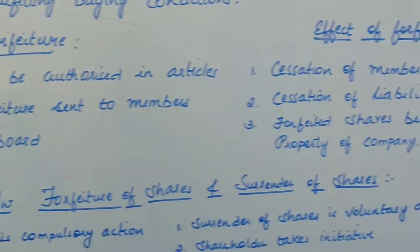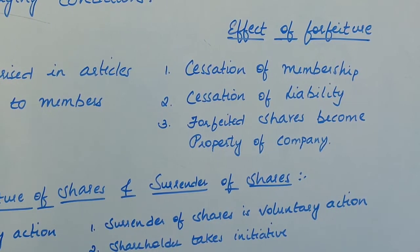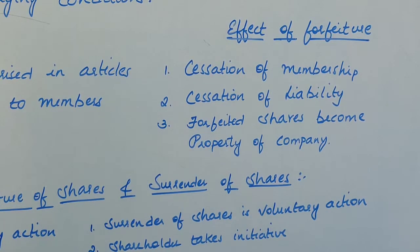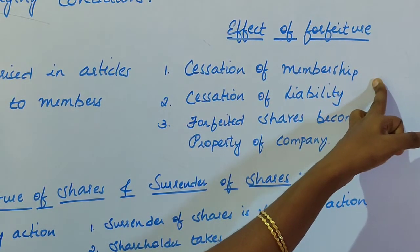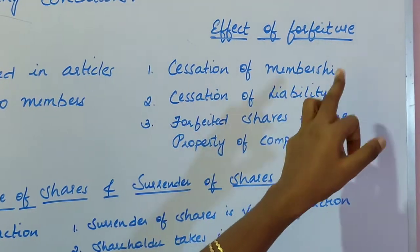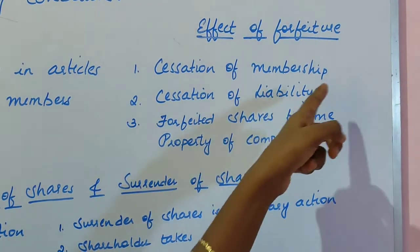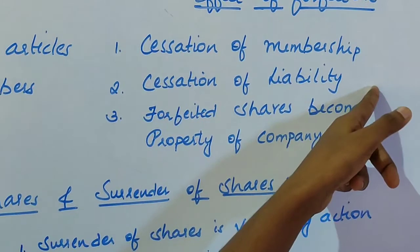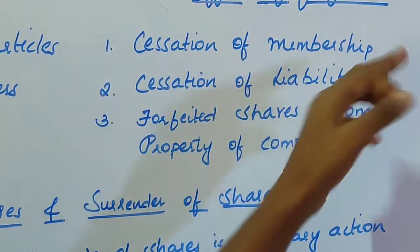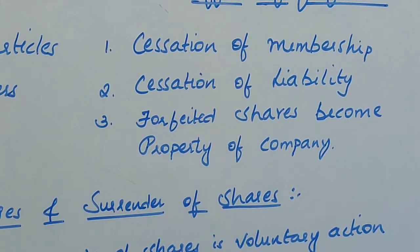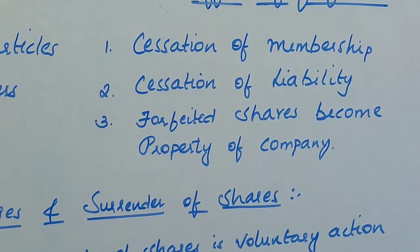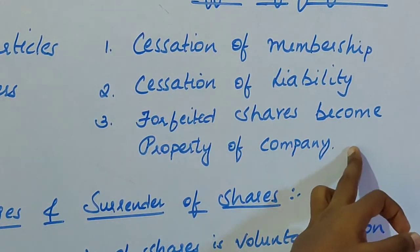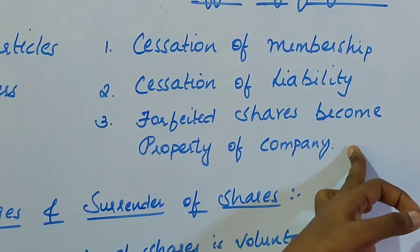Coming to the effects of forfeiture — once a forfeiture takes place, what is the effect? The first effect is cessation of membership, meaning the member's membership in the company comes to an end due to forfeiture. The second effect is cessation of liability — the shareholder's liability on the company will come to an end because the shares are taken back by the company. The third effect is that forfeited shares become the property of the company, and the company can reissue or redispose the shares which it has forfeited.